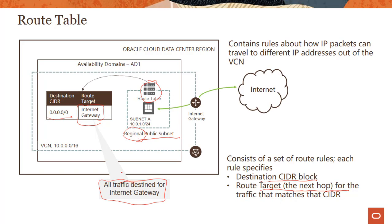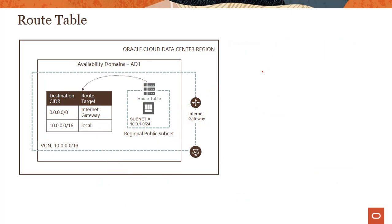You create an internet gateway — it's a managed service provided by the OCI virtual cloud network service. Because of that particular entry in my route table, packets can actually go to the internet and can also come from the internet. So somebody could actually access a web server running in the public subnet.